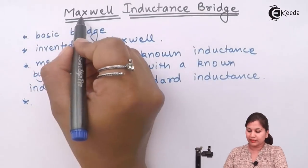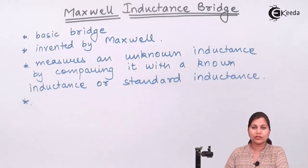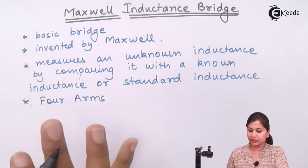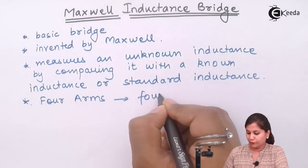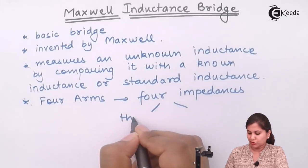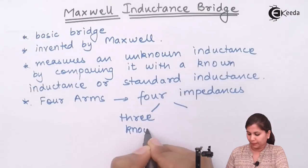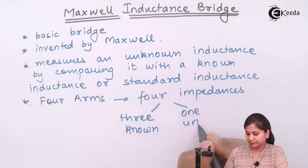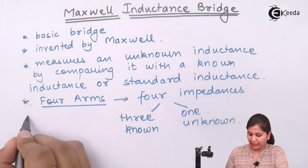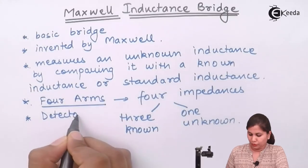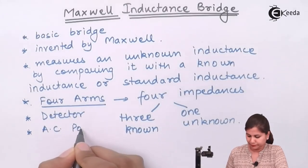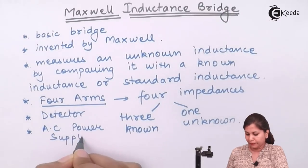This Maxwell inductance bridge is a type of alternating current bridge, so it is going to consist of four arms. Any bridge circuit consists of four arms. In those four arms, four impedances are connected. Out of those four impedances, three impedances are known to us. The bridge will also have a detector for detecting the balance condition of the bridge, and also an AC power supply which is used to operate the bridge circuit.